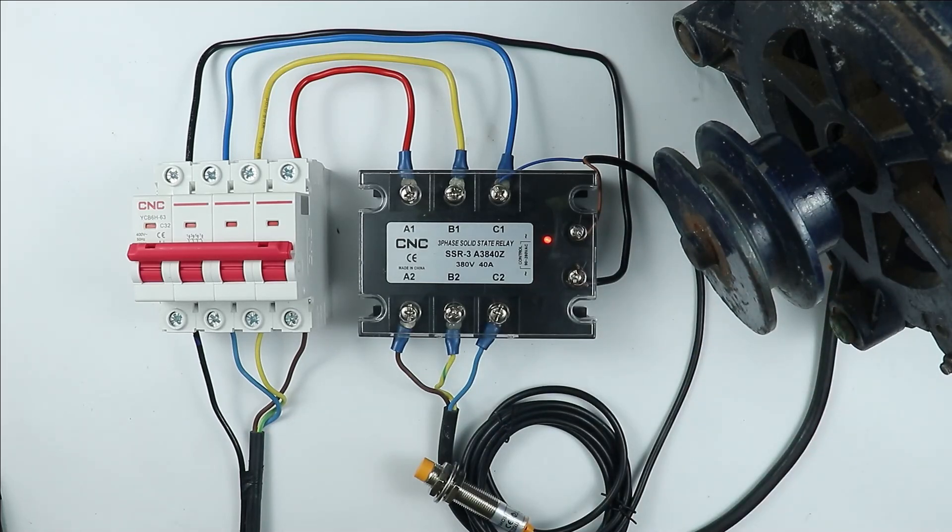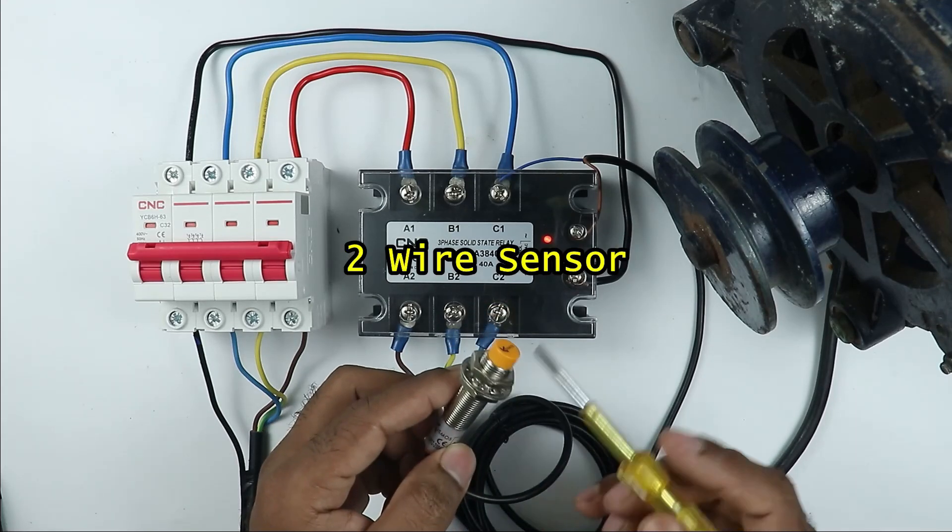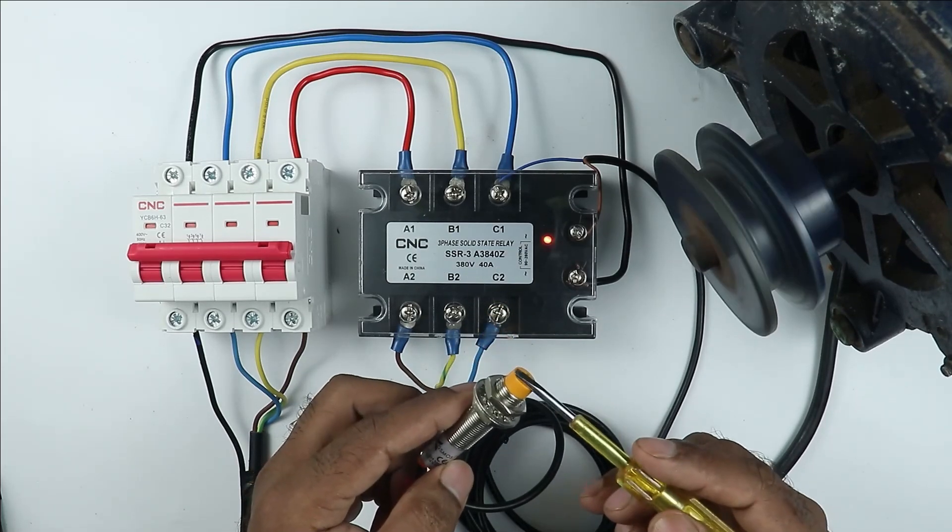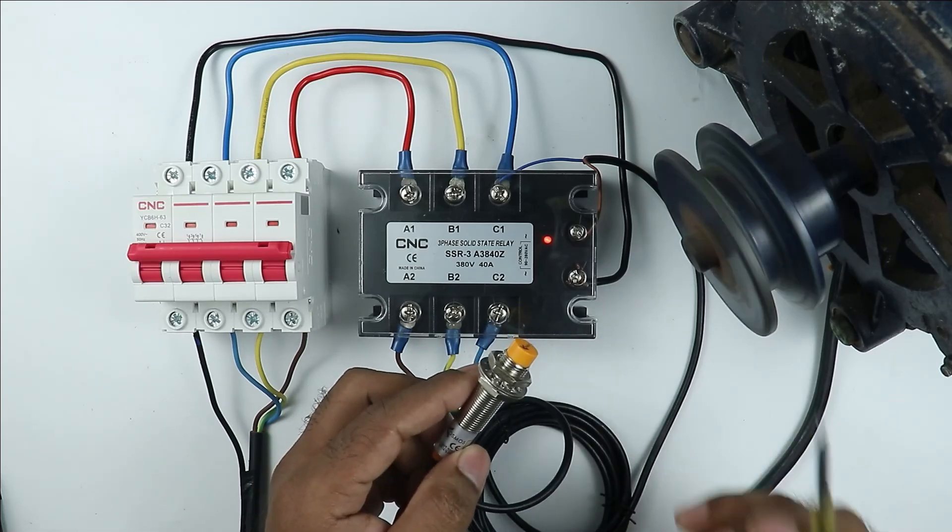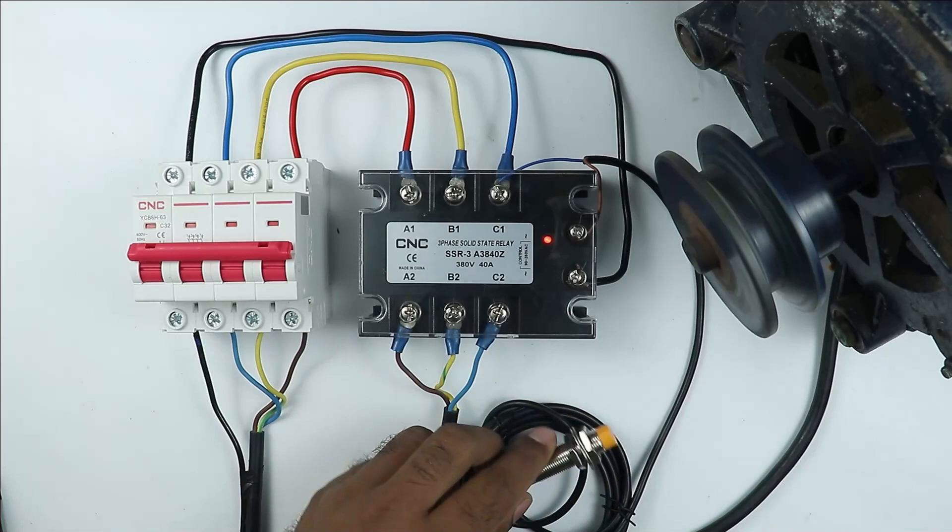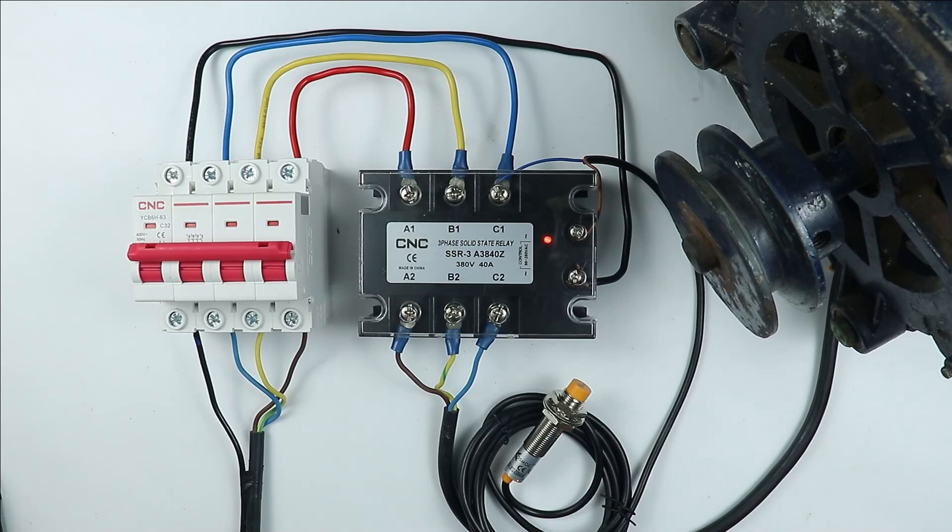Also here's a twist that to operate this relay we are using a sensor. As soon as target comes near to sensor motor turns on and when target is removed motor turns off. So how wiring is to be done and what is solid state relay all these things will be understood through this video. So friends let's start the video.